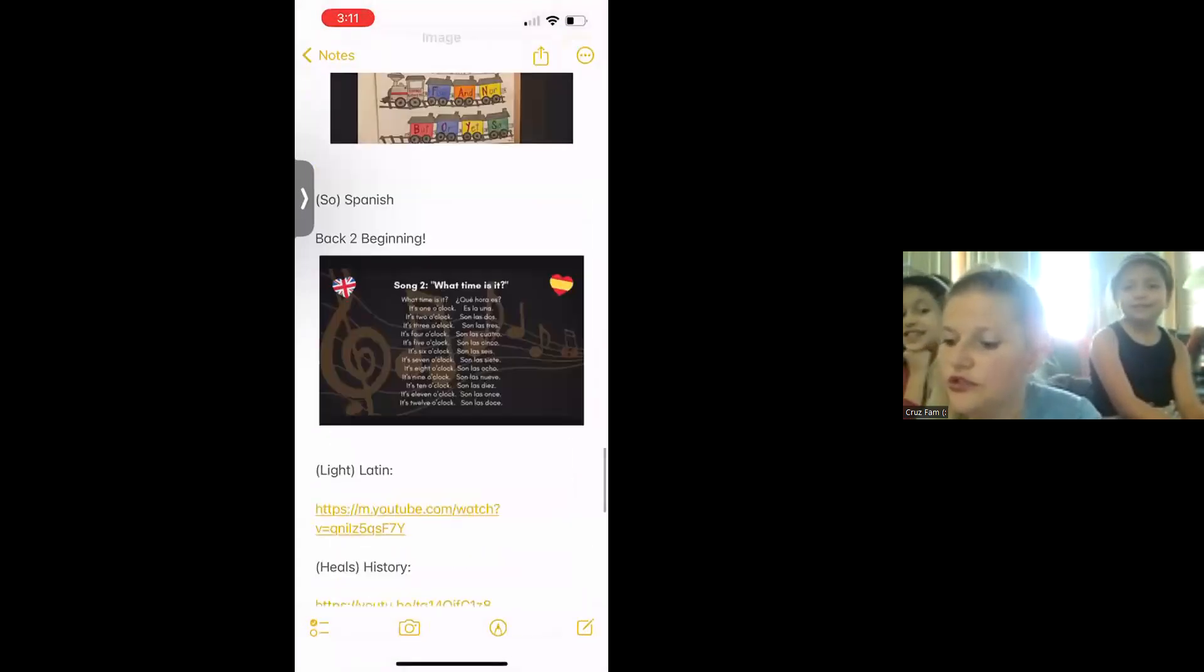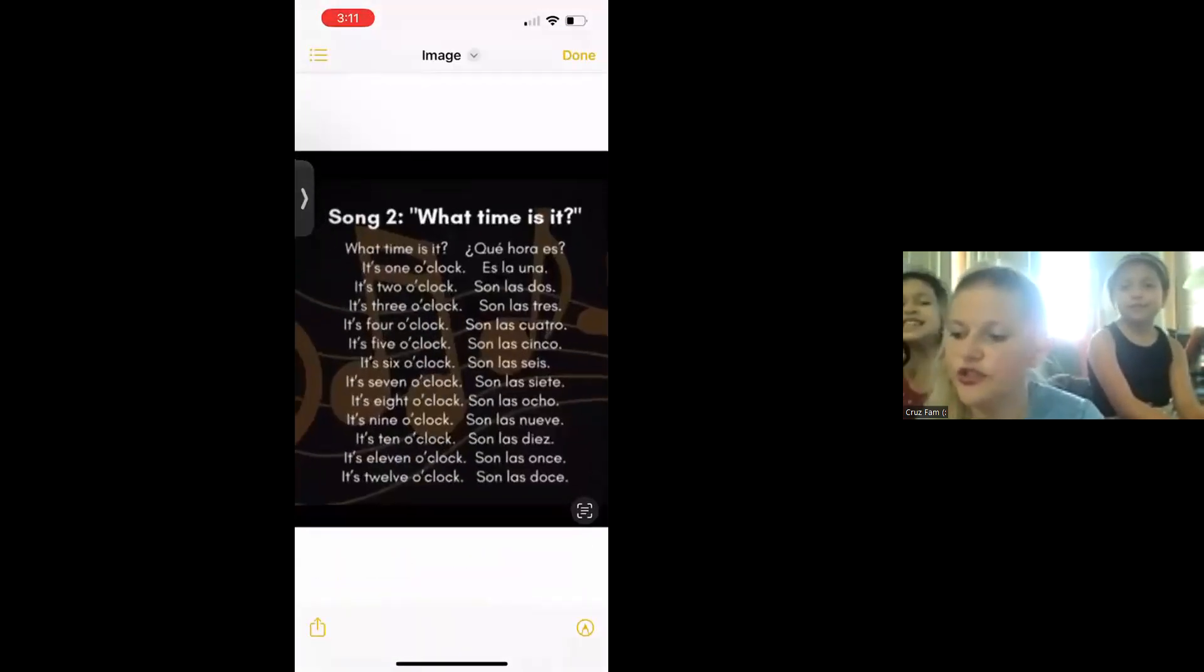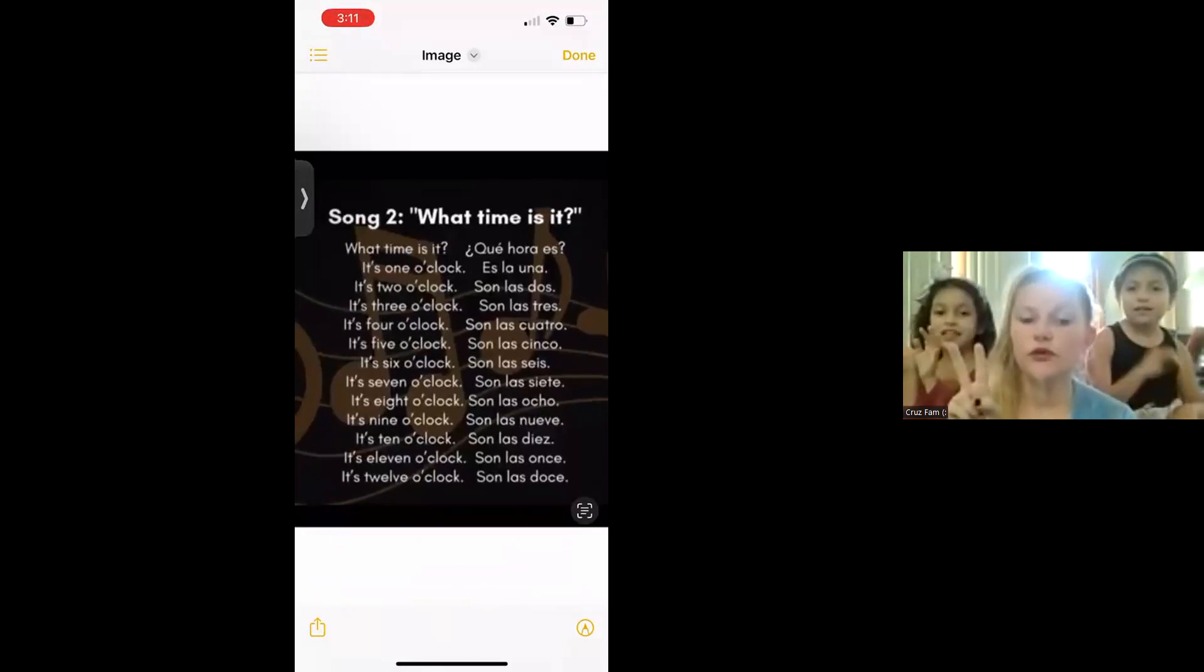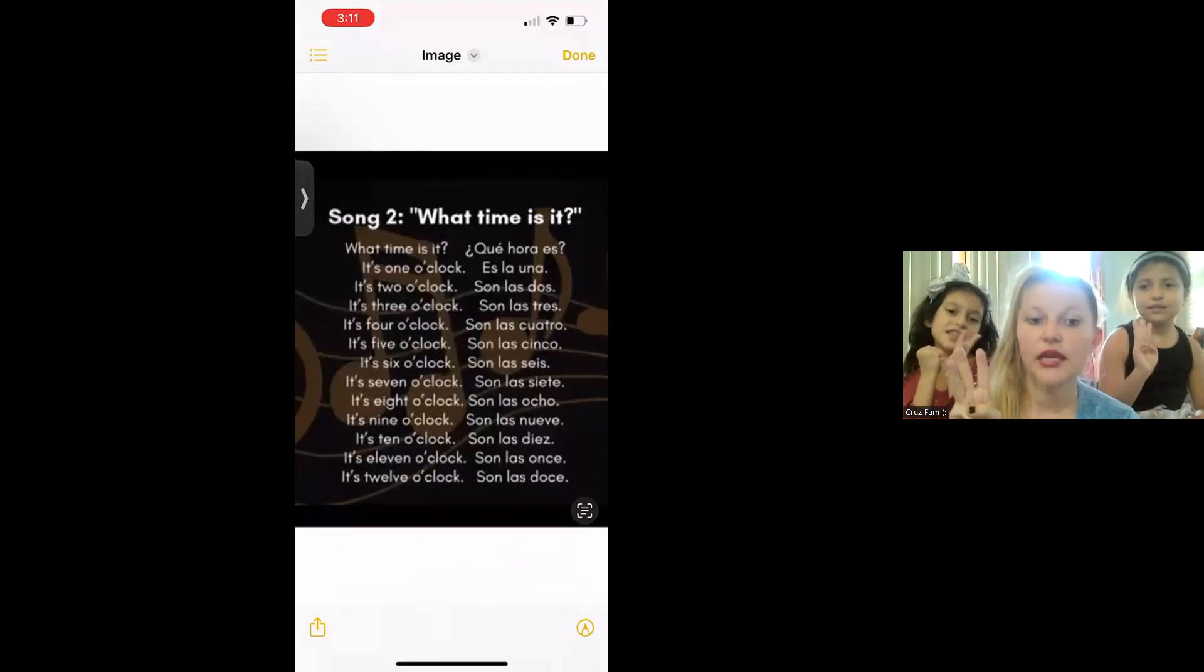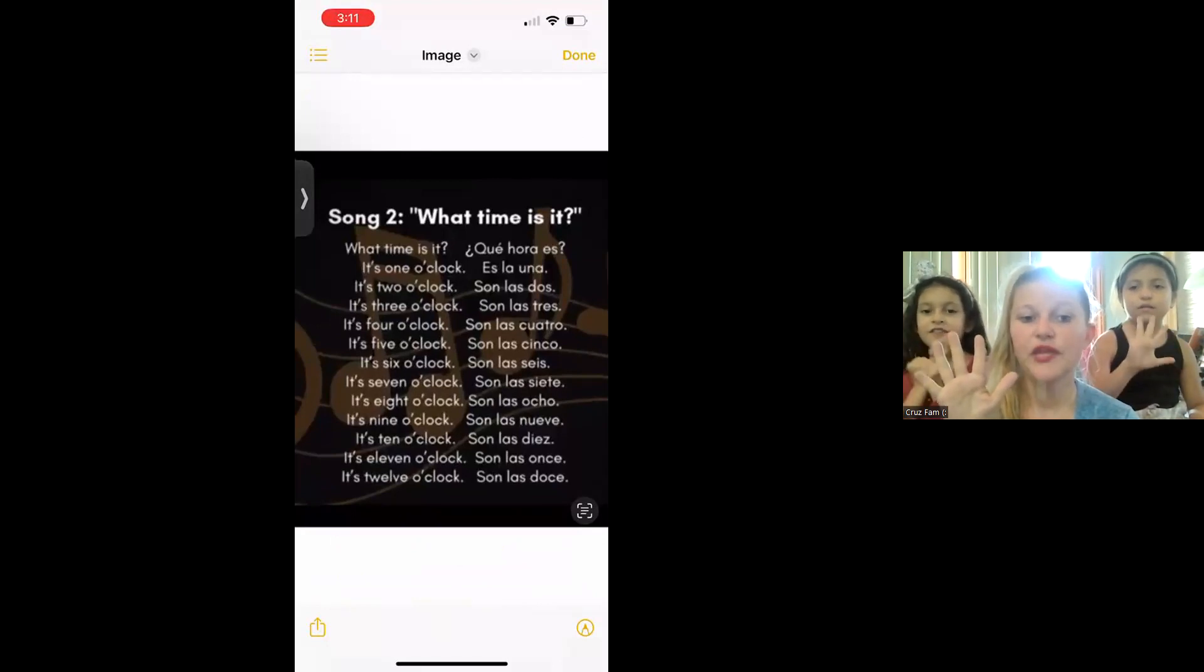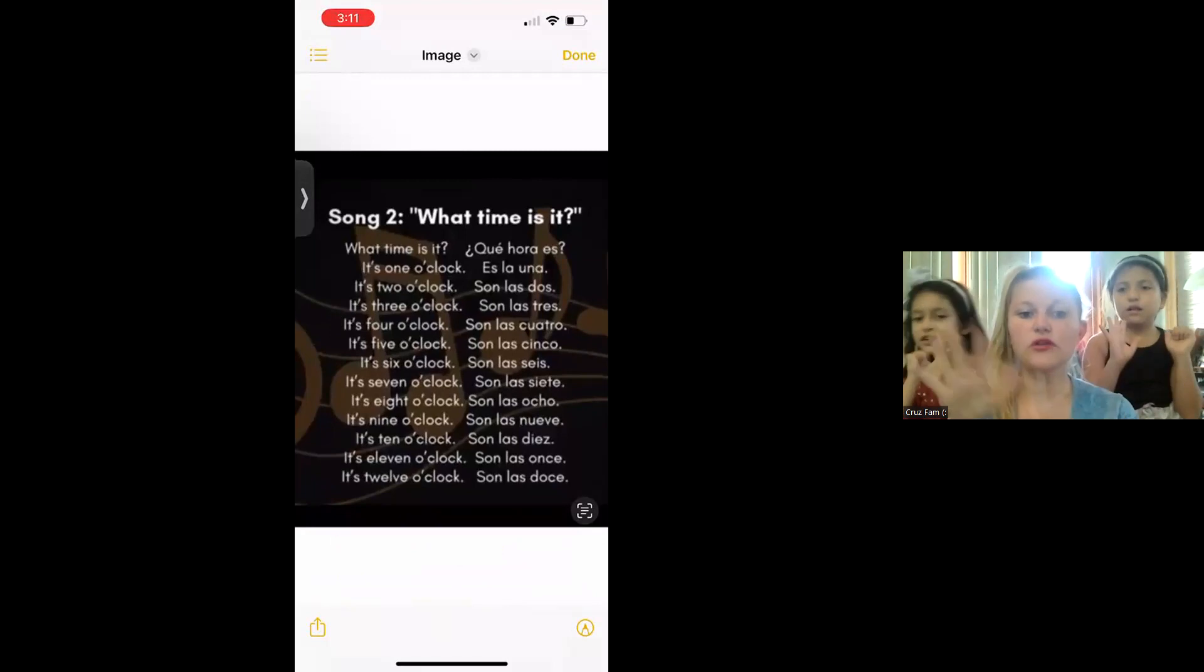Spanish. What time is it? ¿Qué hora es? ¿Qué hora es? It's 1 o'clock, es la una. It's 2 o'clock, son las dos. It's 3 o'clock, son las tres. It's 4 o'clock, son las cuatro. It's 5 o'clock, son las cinco. It's 6 o'clock, son las seis. It's 7 o'clock, son las siete.